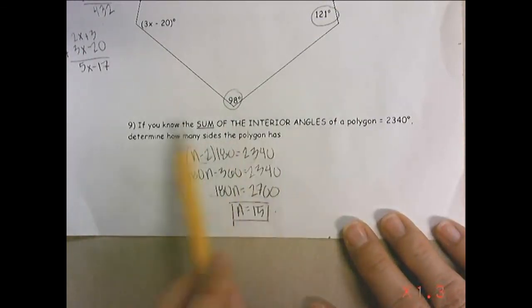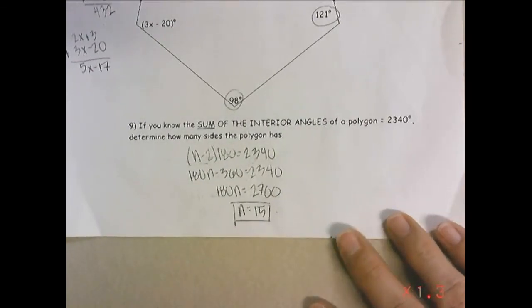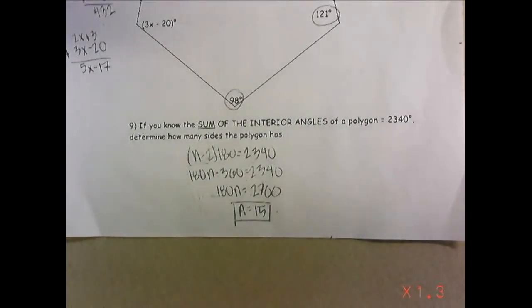That means that figure has 15 sides. And that is it for the single study guide.